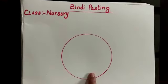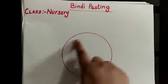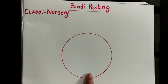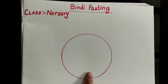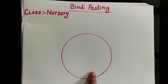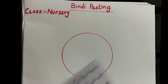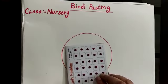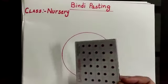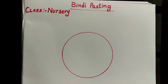What is this? This is a round round circle. And what is this? This is a bindi.